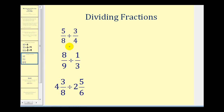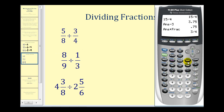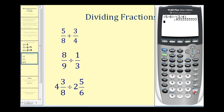Now let's take a look at some division problems. They're going to be entered in almost the same way except now we'll be using division. For our first problem, we have five eighths — five divided by eight — and then divided by, in parenthesis, three divided by four. Press Enter, then Math, Enter, Enter to get the fraction value. The result is five sixths.